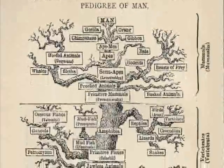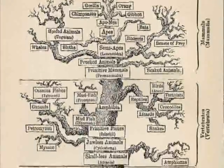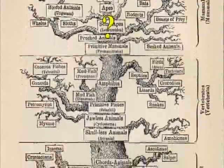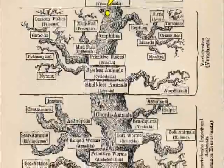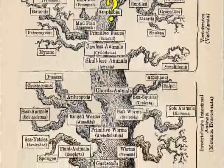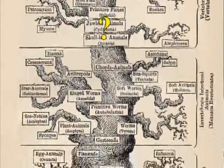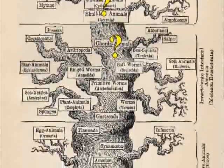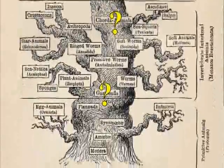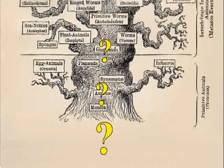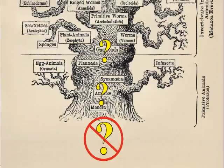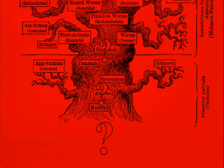It goes something like this. Supposedly, humans and apes branched off from an unknown common ancestor, an ape-like creature. This ape-like creature evolved from a missing mammal ancestor, which evolved from the missing amphibian ancestor, which evolved from the missing fish ancestor, which evolved from the missing vertebrate ancestor, which evolved from the missing invertebrate ancestor, which evolved from the missing single-celled ancestor, which evolved from... Warning! Warning! Attempted intrusion into the no-go zone!